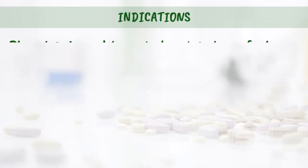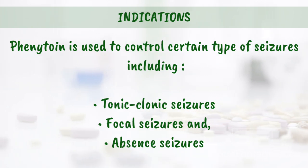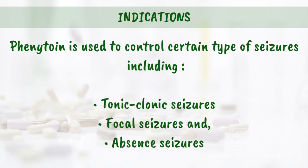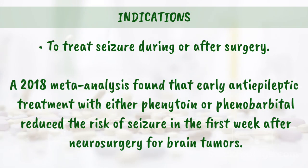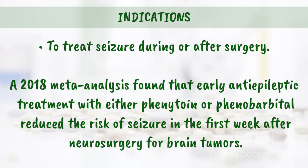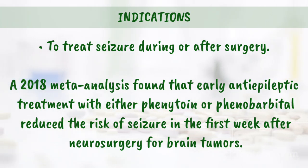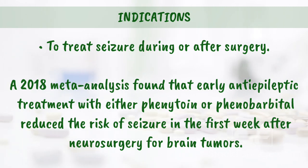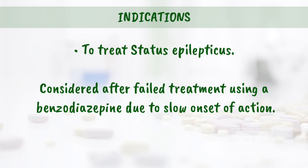Indications: Phenytoin is used to control certain types of seizures, including tonic-clonic seizures, focal seizures, and absent seizures. It is also used to treat seizures during or after surgery. A 2018 meta-analysis found that early antiepileptic treatment with either phenytoin or phenobarbital reduced the risk of seizure in the first week after neurosurgery for brain tumors.